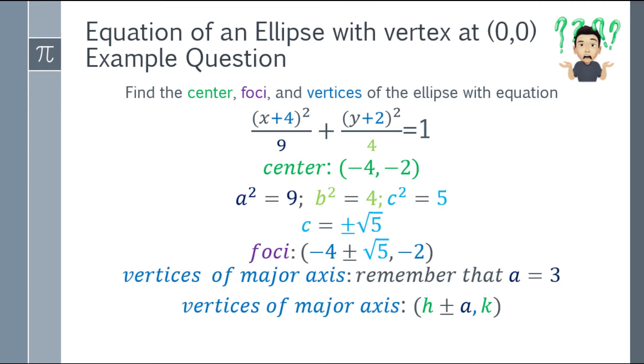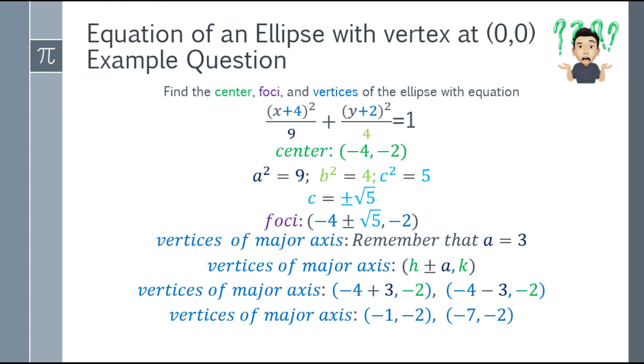Alright, next, let's have the vertices. For vertices, we need to find the major axis first. Vertices of major axis, remember, our a is 3, right? I said a square equals 9, so a equals 3. And the vertices of major axis, according to the table, is h plus minus a, comma k. So the vertices of major axis, there are two. So the first one is negative 4 plus 3, comma negative 2. And the second is negative 4 minus 3, comma negative 2. So simplify, that will be the two major axis vertices. Vertices of major axis is negative 1, comma negative 2, and negative 7, comma negative 2.